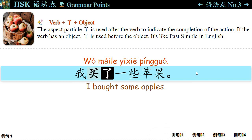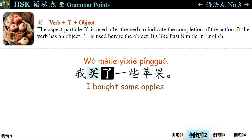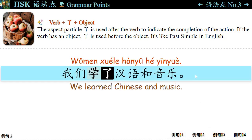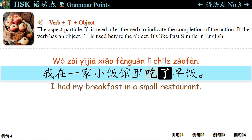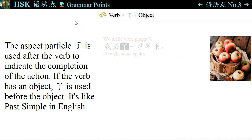语法点三: We use verb plus the aspect particle 了 to express a completed action, like past simple in English. 例句一: 我买了一些苹果。 I bought some apples. 例句二: 我们学了汉语和音乐。 We studied Chinese and music. 例句三: 他完成了任务。 He completed the task. 例句四: 我在一家小饭馆里吃了早饭。 I had my breakfast at a small restaurant. Verb plus the aspect particle 了 plus object.